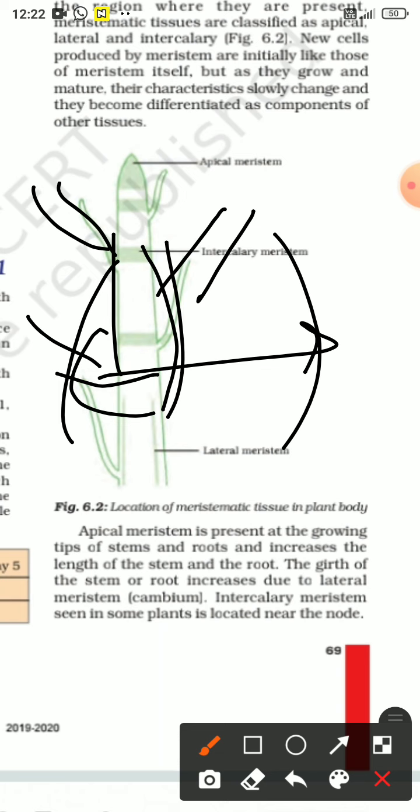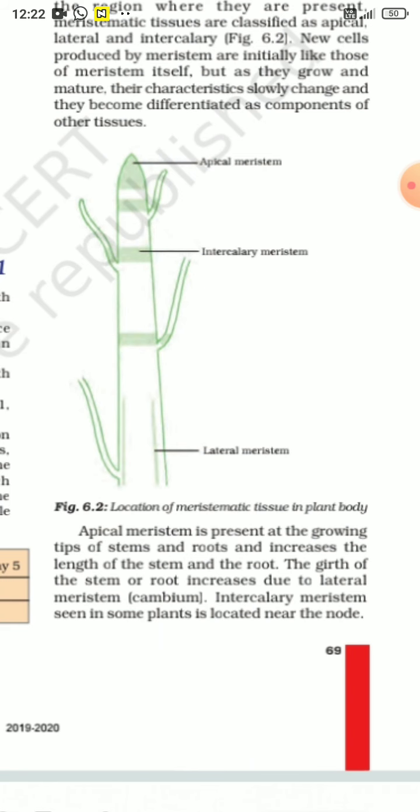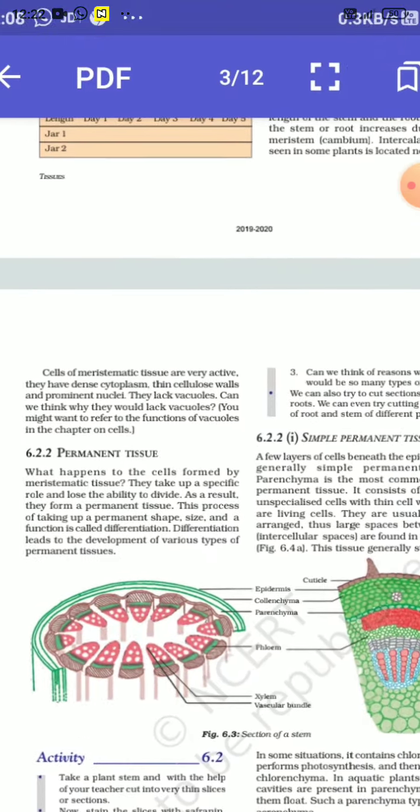So, these are tissues for growth. If we talk about chlorophyll, they are not present. These are capable dividing tissues.